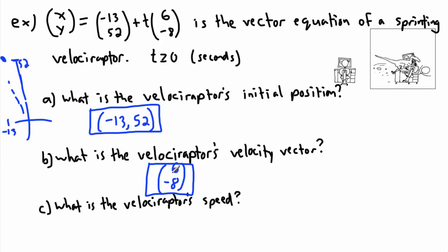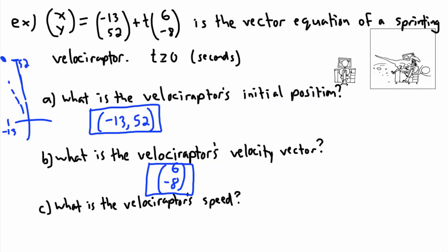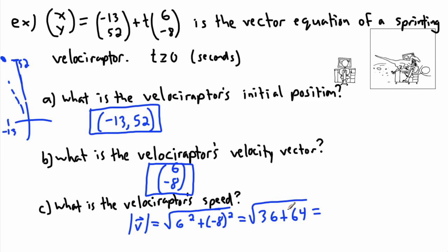What is the velociraptor's speed? We've learned that if this represents a moving object — or a moving dinosaur — then the speed is the length of that velocity vector. We just need the magnitude of the velocity vector. So it's the square root of 6 squared plus negative 8 squared. 6 squared is 36, negative 8 squared is positive 64. So 36 plus 64 is 100, and the square root of 100 is just 10. That means the velociraptor goes 10 meters per second — that's actually really fast!